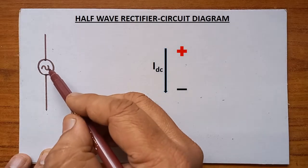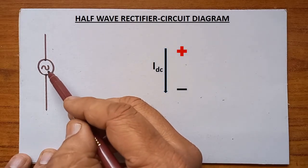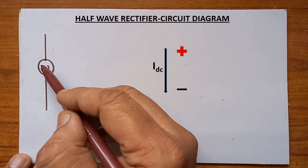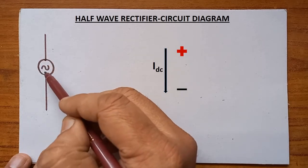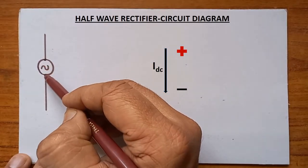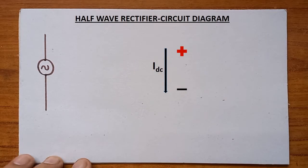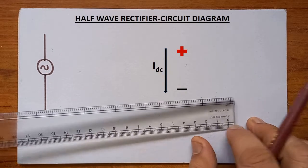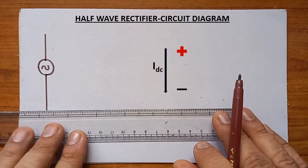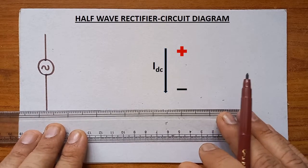So for that, the circuit diagram is to be drawn. Here, this is the source of alternating voltage — this is the symbol of AC. First we have to draw like this. These are the two terminals of the AC. This alternating current and voltage source must be connected with the primary end of the transformer.